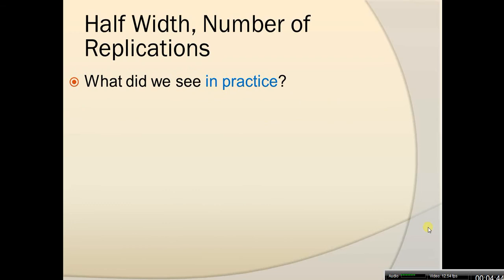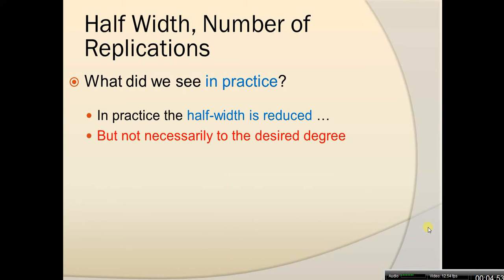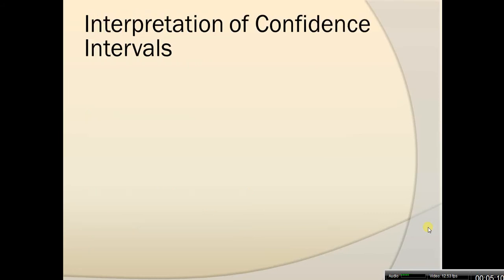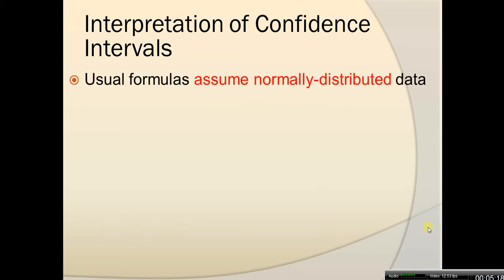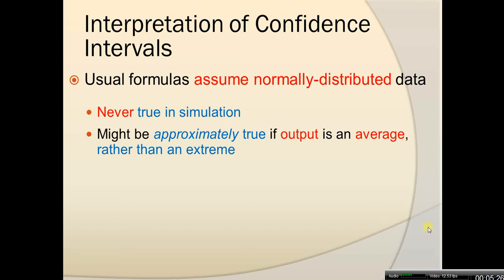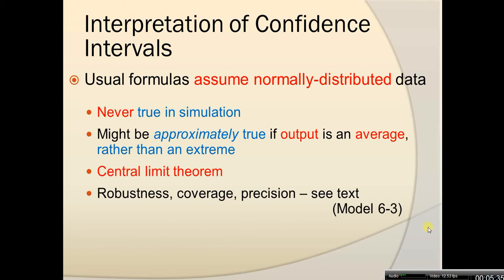What did we actually see in practice? Did those approximations work? In practice, the half-width is reduced, but not necessarily to the desired degree. The reason is that we are just using approximations, so we can't expect precise results. Moreover, the formulas assume normality, which might not be the case. The usual formulas assume normally distributed data, but that is never truly the case in simulation — though it might be approximately true if output is an average rather than an extreme, based on the central limit theorem. For more details on robustness, coverage, and precision, see model 6.3.